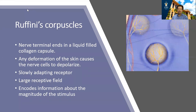Finally, there are the Ruffini corpuscles. These are nerve endings found in a small, bulbous, liquid-filled collagen capsule. A deformation of the skin leads to a deformation of these capsules, which depolarizes the cells. These cells have large receptive fields and are slowly adapting, and they are very useful for telling us about the magnitude of the stimulus. There are also other receptor types in the skin, like the Krause bulbs and pain receptors, which you can read about in your textbook.